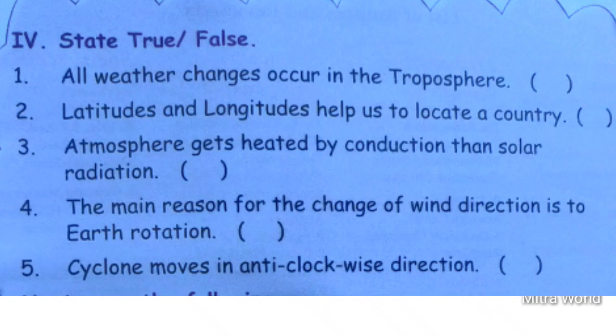Fifth one — cyclone moves in anti-clockwise direction. This is true. Cyclone moves in anti-clockwise direction in the northern hemisphere. If you look from the north side it moves clockwise in the southern hemisphere. So cyclones move in two directions. This is a true statement. Children, now check your answers.